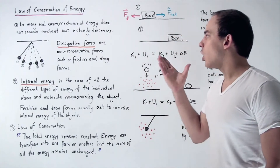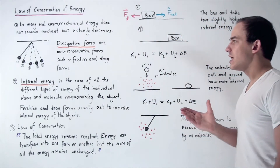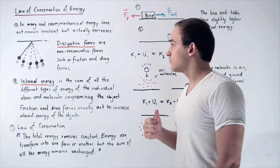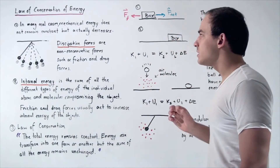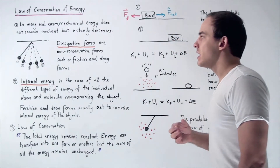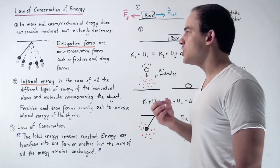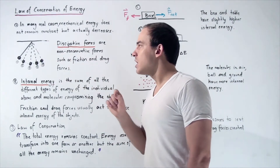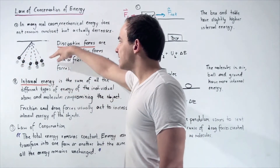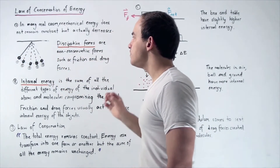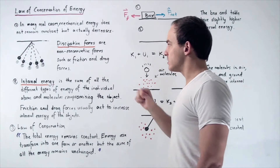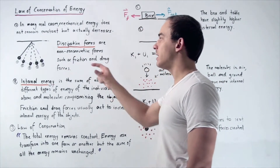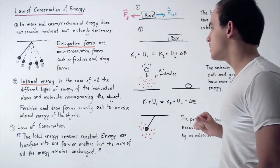Dissipated forces are non-conservative forces such as friction and drag forces — air resistance, for example — and these forces act to decrease the mechanical energy of our system. In fact, the reason a pendulum will not reach the same exact height on the other end is because air resistance or drag force acts on the pendulum object.